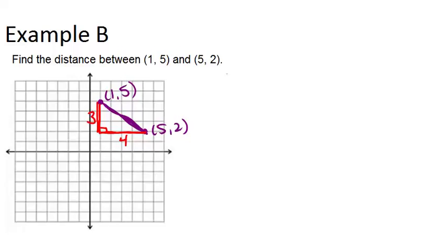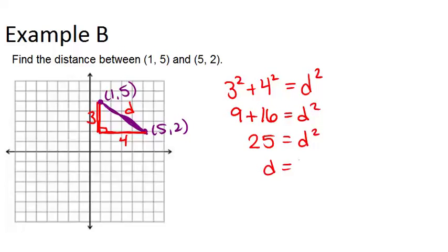So what we have is 3 squared plus 4 squared equals what we're trying to figure out, d, d squared. So 9 plus 16 equals d squared, which means that 25 equals d squared. And d must equal 5, because 5 squared is 25.